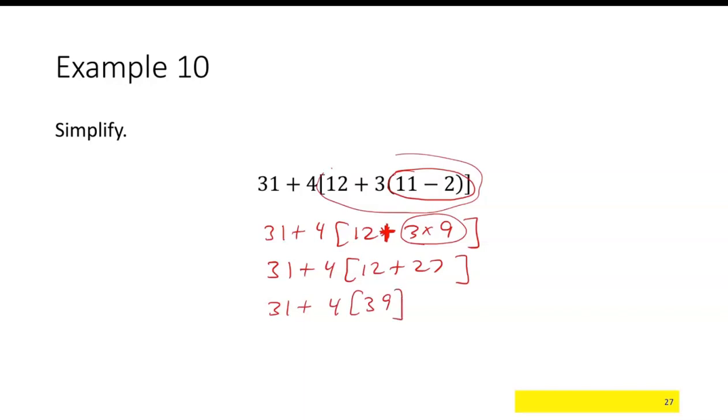And then 31 plus 4 times 39. 4 times 9 is 36... 12, 15... 156. So 31 plus 4 times 39 is 156. And then add them together, we end up with 187.